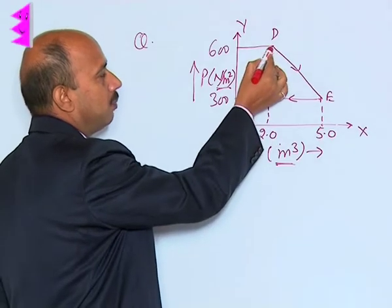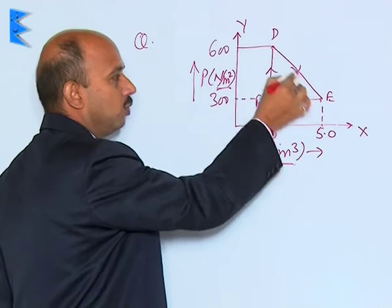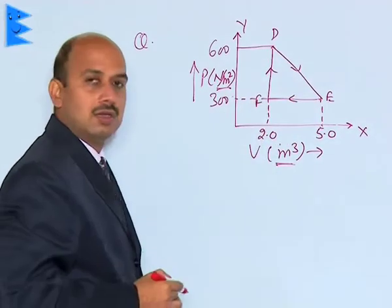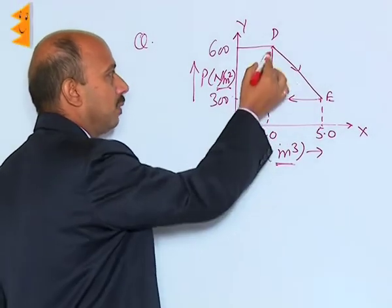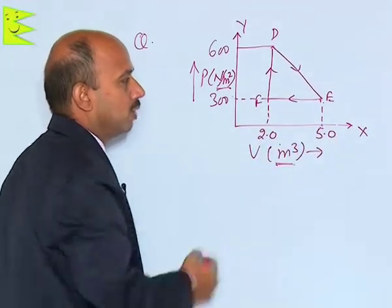See here, first the pressure at 600 is reduced to 300. When the pressure is reduced, there is an increase in volume from 2 to 5 meter cube.